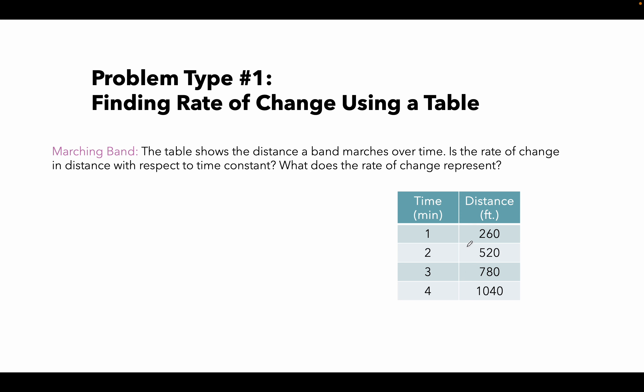So the real question here is, is this a constant rate or is the marching band getting faster and slowing down as they go? Well, let's check. Is there 260 feet between 260 and 520? The answer is yes. Is there 260 feet between 520 and 780? Yes, it looks like 260 feet per minute. Let's see if it stays true for the third and fourth minute. Is there 260 feet between 780 and 1040? Yes. All right, so it is constant.